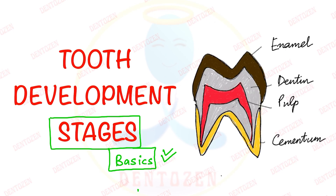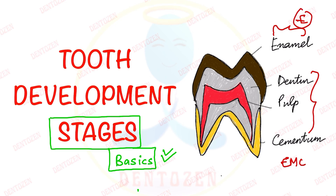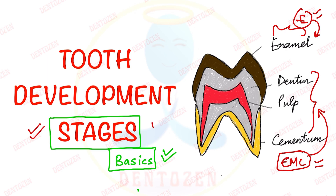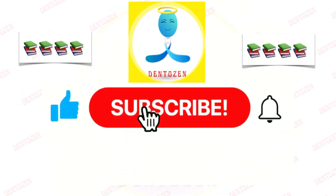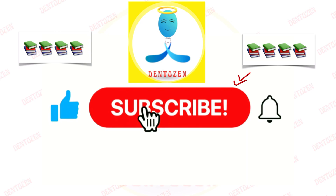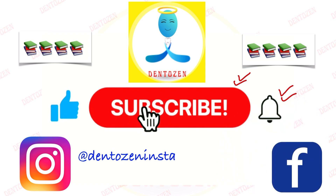In that first video, we discussed that enamel forms from ectoderm, and dentine, pulp, and cementum form from ectomesenchyme. In this video, we are going to understand the stages of tooth development. Please subscribe to Dentist and hit the bell icon so that you remain notified about new videos. You can also follow us on Facebook and Instagram for more related content and exam questions.